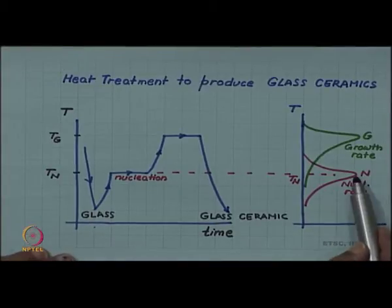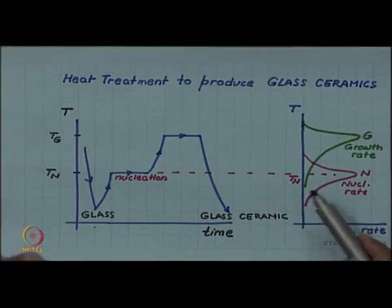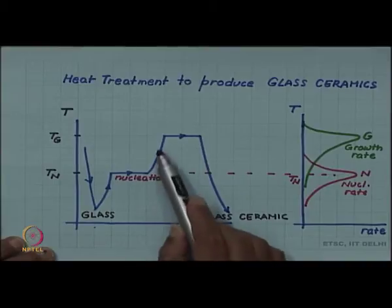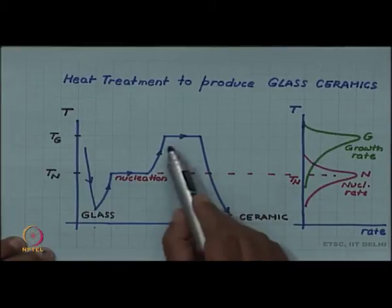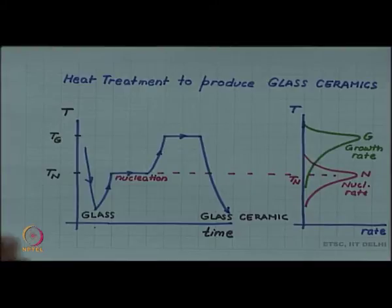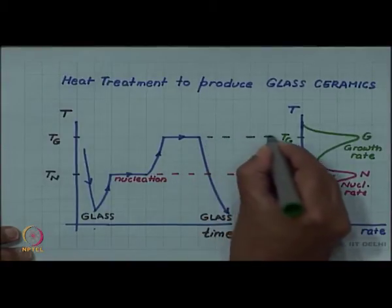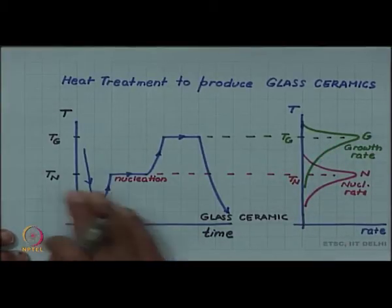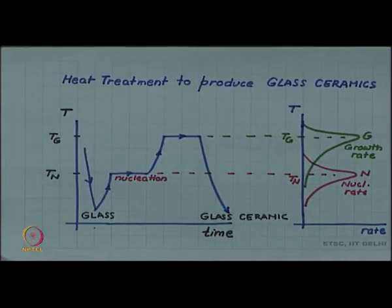However, if we continue at this temperature the growth rate is very slow and the time required for formation of a significant amount of crystal will be very large. That is why a jump in temperature is given after a sufficient number of nuclei are formed — temperature is raised to T_g, the temperature at which the growth rate is maximum. Thus, whatever nuclei formed at T_N now start growing at a faster rate.